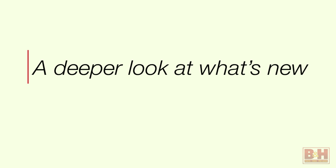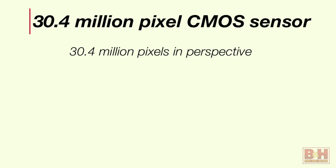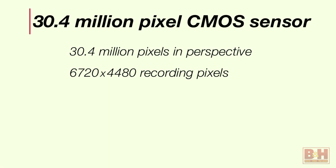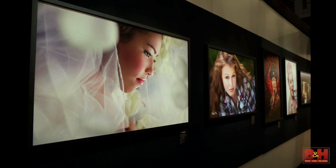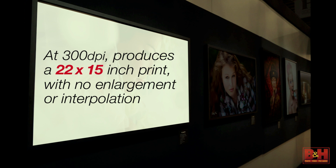Let's start with what is new. First, the 30.4 million pixel CMOS sensor. To put the numbers in perspective, as an industry we're often guilty of throwing numbers out there until information becomes just a number. If you print at 300 dpi without any enlargement — just bring a file into Photoshop and say print — you're printing about a 22 by 15 inch image with no enlargement or interpolation whatsoever.